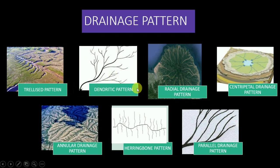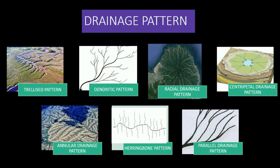What is a dendritic pattern? Dendritic drainage is a tree-shaped drainage pattern, and it is the most common and widespread pattern. The dendritic pattern is associated with areas of homogeneous lithologies and horizontal or very gently dipping strata. Examples of rivers with a dendritic pattern include the Kaveri and Damodar rivers.